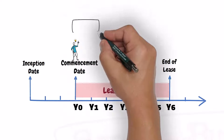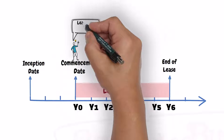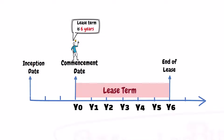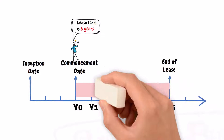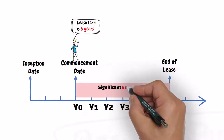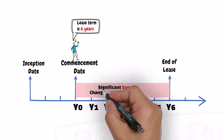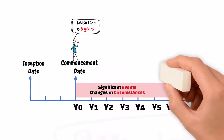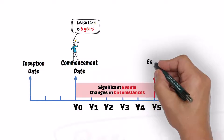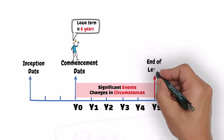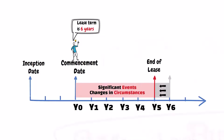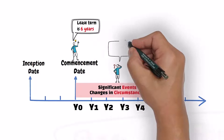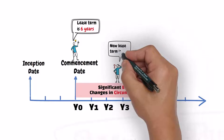In the previous lecture, we learned how to assess the lease term on the commencement date. Sometimes after the commencement date, significant events or changes in circumstances might occur during the lease term that can affect the length of lease term that was previously assessed on the commencement date. In this case, the lessee should reassess the length of the lease term.